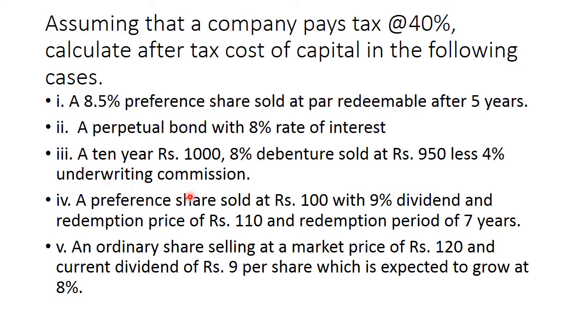Next, a preference share sold at 100 rupees. The par value is 100 which is again sold at 100 itself with 9% dividend and redemption price of 110 and redemption period of 7 years. So it is a preference share having face value 100, net proceed 110, period of maturity is 7 years and the rate of dividend is 9%.